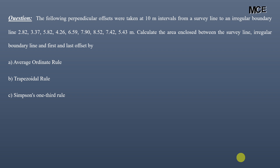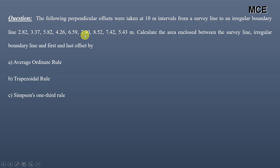Hello and welcome back to Master Civil Engineering. In this video you will learn how to find the area of an irregular plot using the average ordinate rule, trapezoidal rule, and Simpson's one-third rule when we have been given the offsets at different intervals. The following perpendicular offsets were taken at 10-meter intervals from a survey line to an irregular boundary line. The offsets are 2.82, 3.37, 5.82, 4.26, 6.59, 7.90, 8.52, 7.42, and 5.43 meters — nine offsets in total.